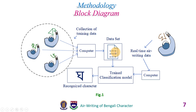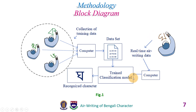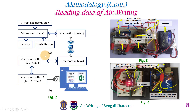This is the block diagram of the system. First, we prepare a dataset — we write Bengali characters repeatedly in the air and collect the data. This dataset is then used to train the classification model. Now, if we write any letter in the air and pass this data to the classification model, the model will recognize that character.